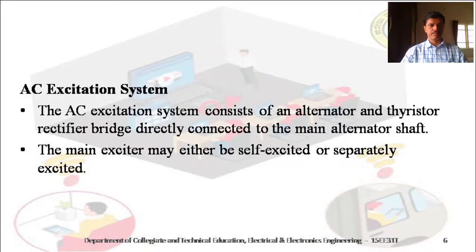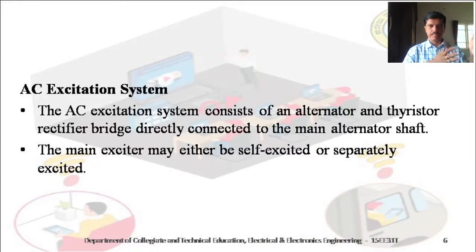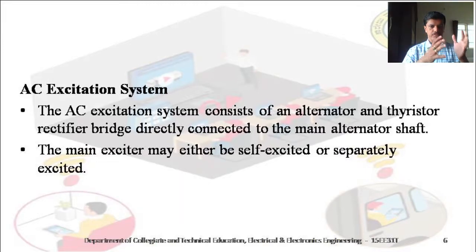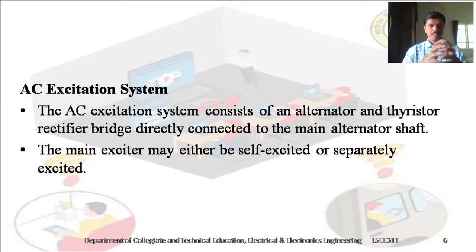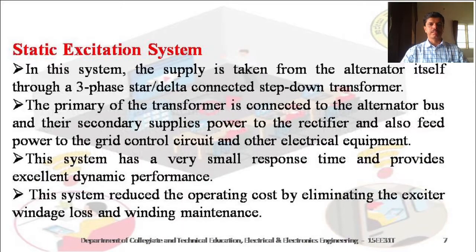The AC excitation system is a combination of an alternator and a thyristor rectifier bridge directly connected to the main alternator shaft. In this case, the main exciter may be a self-excited one. Next, we should know about the static excitation system.